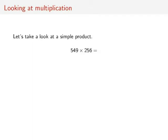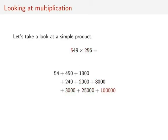Let's start with multiplication and do a very simple product: 549 times 256. If we follow the method that most of us learned in grade school, we have to do this digit by digit. So we multiply the 9 by the 6 and get 54, then the 9 times the 5 — which is in the tens place — so we get 450. And then the 9 times the 2, and the 4 times the 6, and the 4 times the 5, and the 4 times the 2, and the 5 times the 6, and the 5 times the 5, and the 5 times the 2. And then when we're all done, we have to add all of that up and get 140,544.